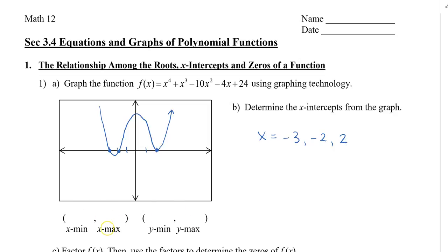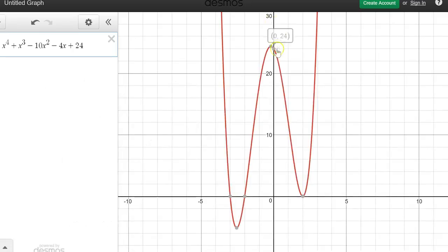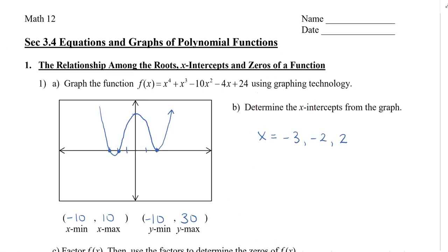I want to note the scale I used in Desmos: it was negative 10 to positive 10 for the x-axis, and for the y-axis it was from negative 10 to positive 30. So we know this was quite high — if we go back to look, it was actually at 24. You can label that if you want.